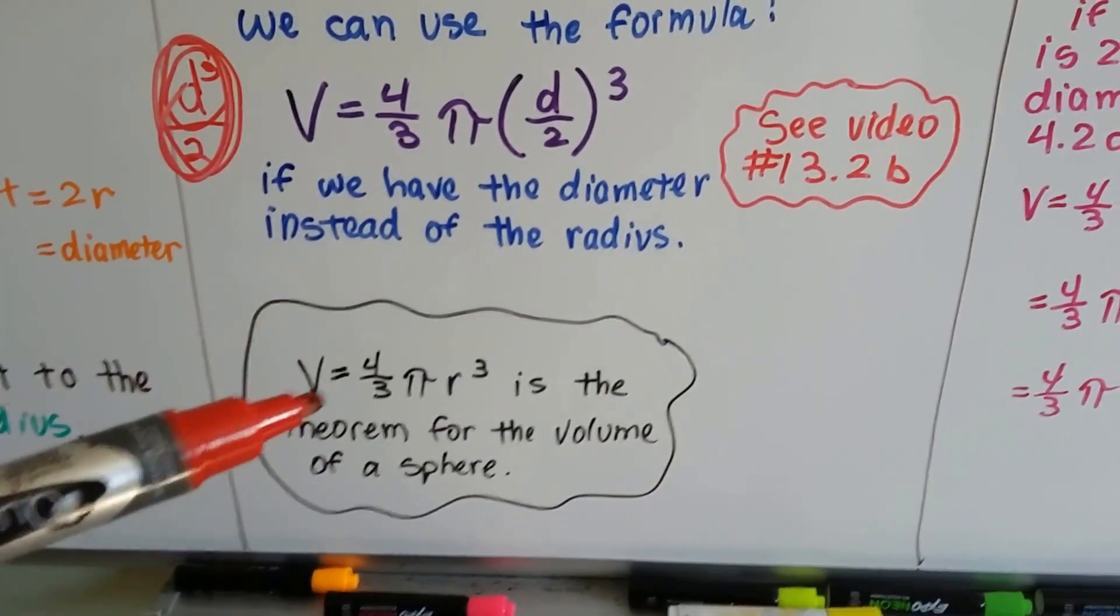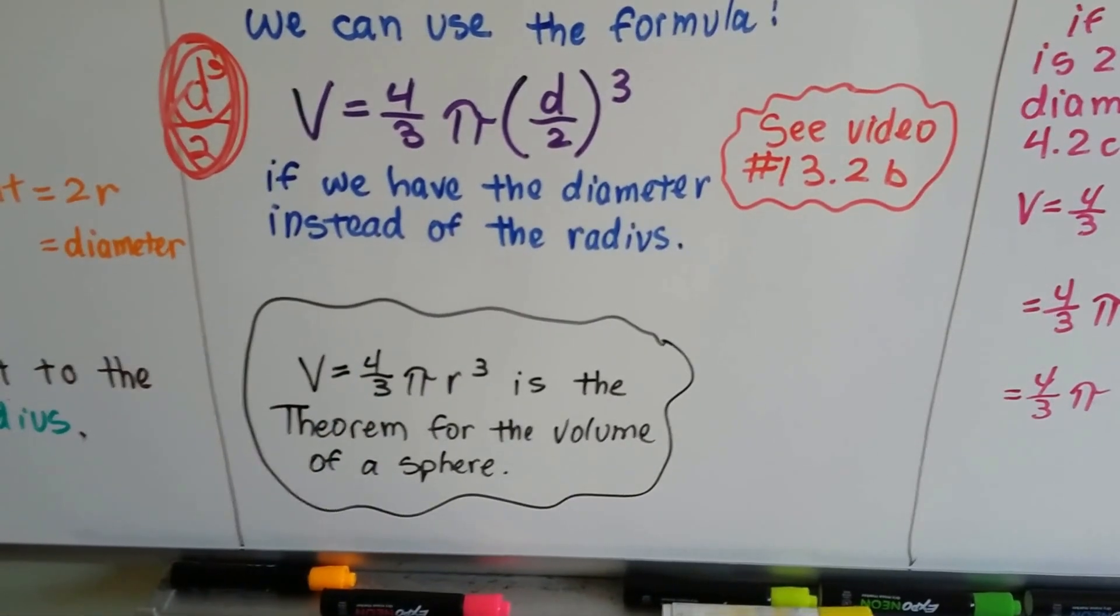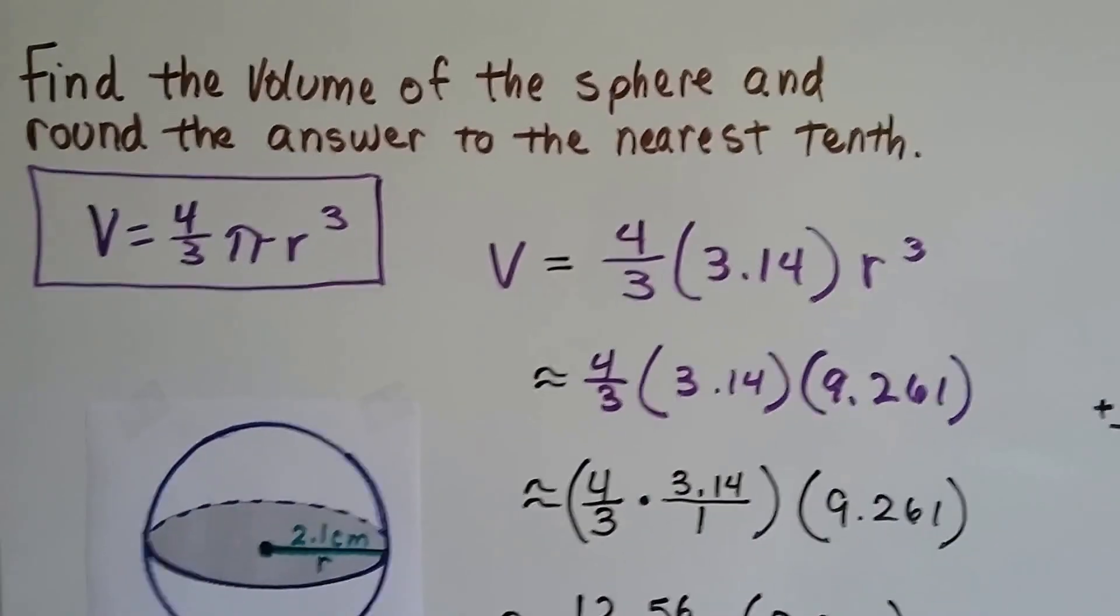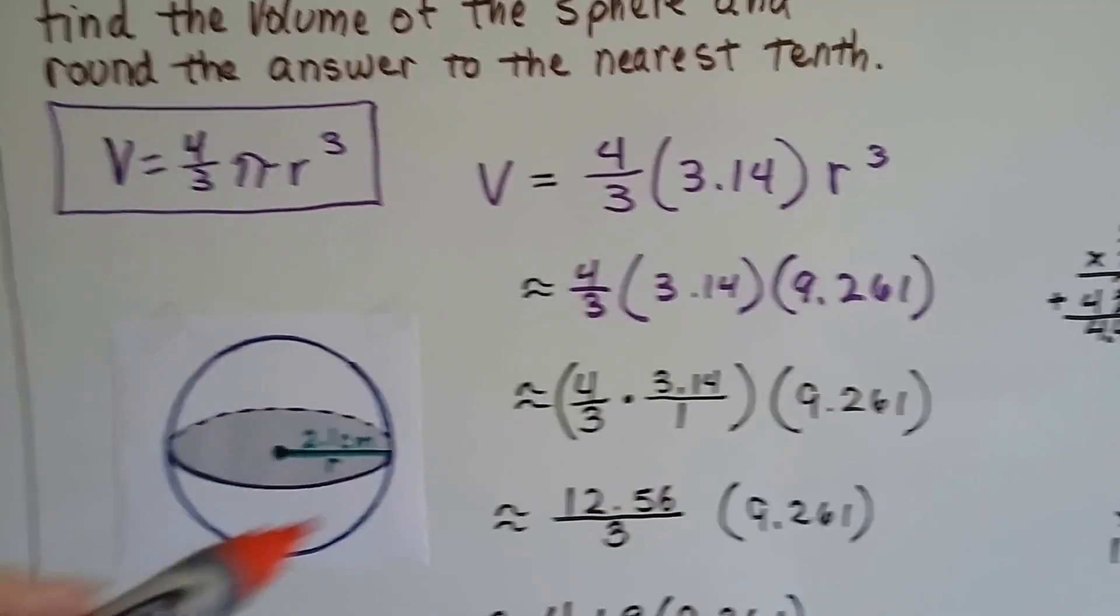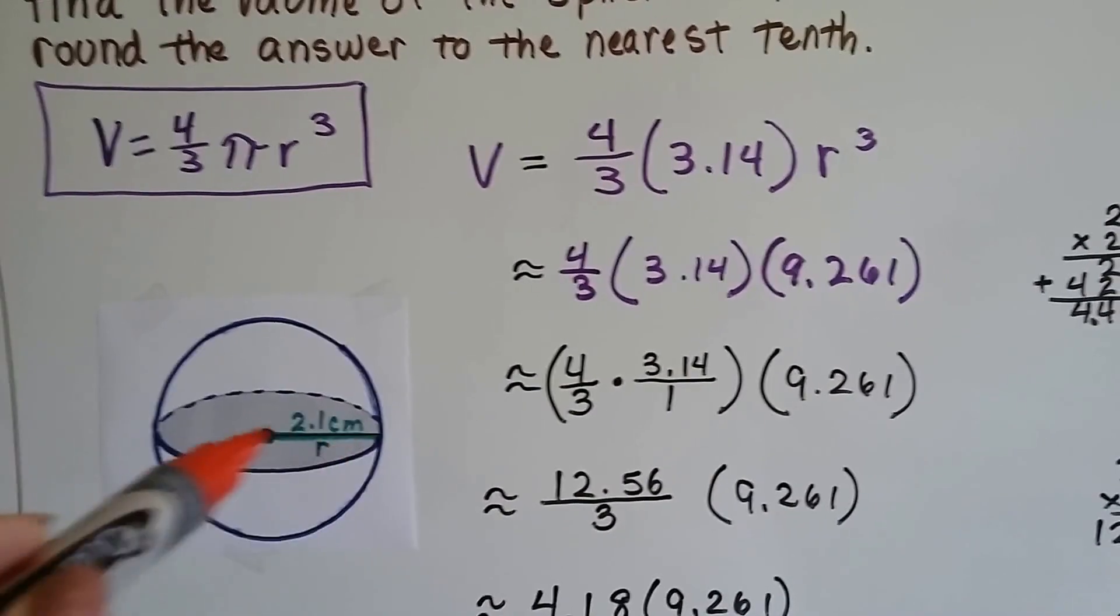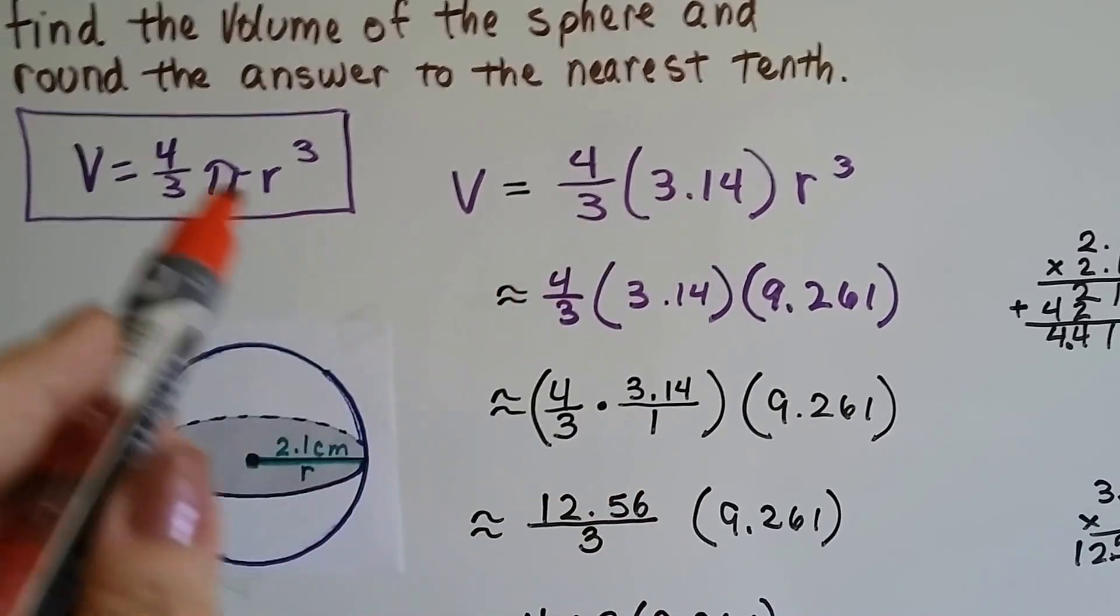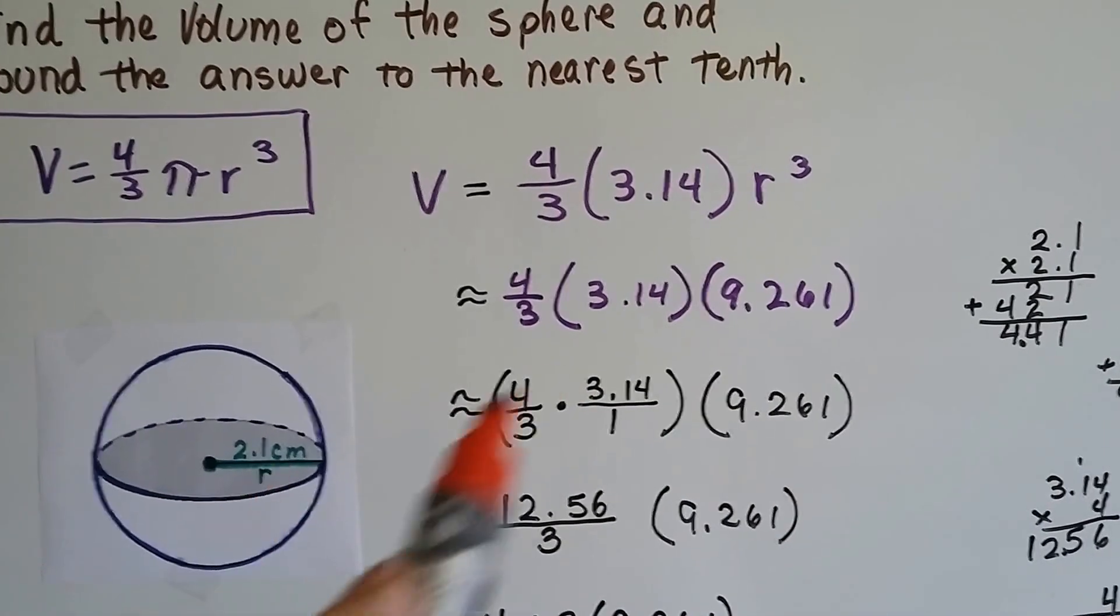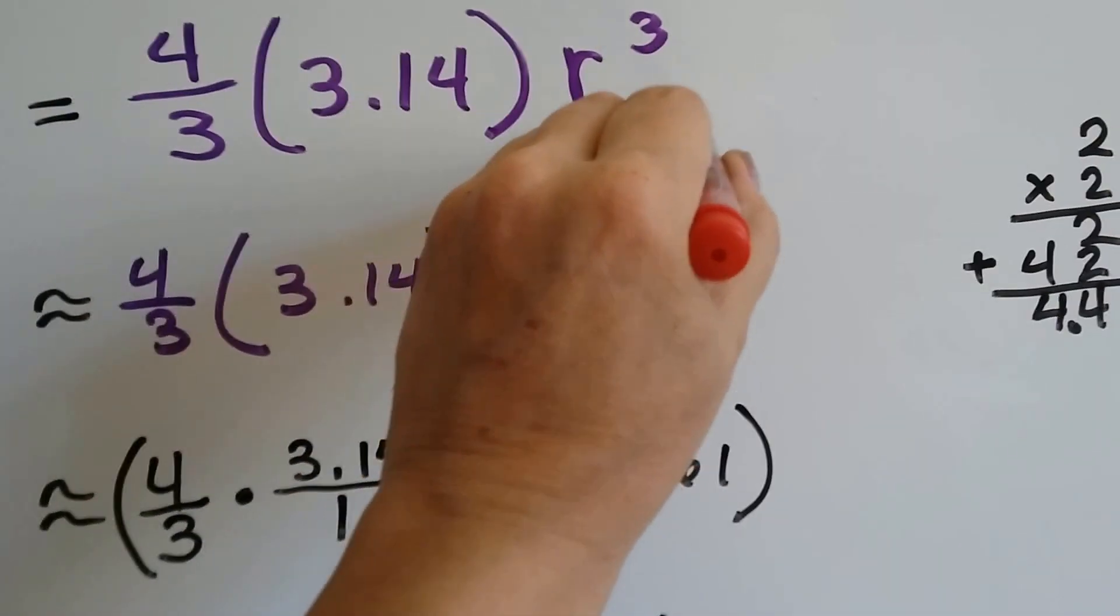Now, this V equals four-thirds pi r cubed is a theorem for the volume of a sphere. And we've talked about theorems and axioms and postulates and definitions for proof. So, to find the volume of a sphere and round the answer to the nearest tenth, here's our theorem, our formula for the volume of a sphere. Here's our sphere, and it's got a 2.1 centimeter radius. So, we plug the numbers in, and we've got four-thirds times 3.14 for pi, and that needs to be multiplied by the radius cubed, 2.1 cubed. So, this is going to be the 2.1 cubed.